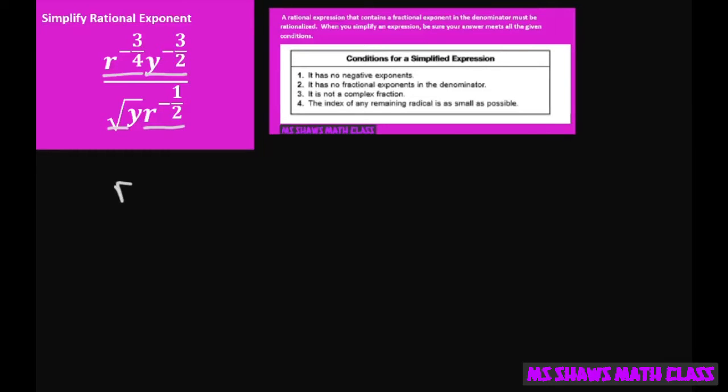So I'm going to first rewrite this as r to the negative three-fourths y to the negative three-halves, and then I'm going to put r first. So this is going to be r to the negative one-half, and this I can rewrite as y to the one-half.